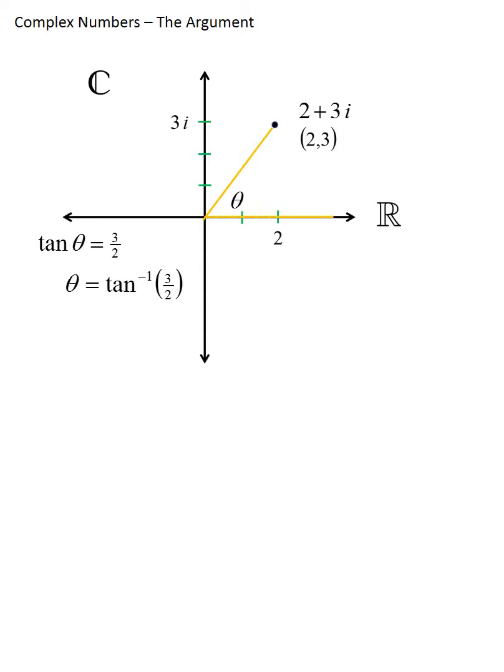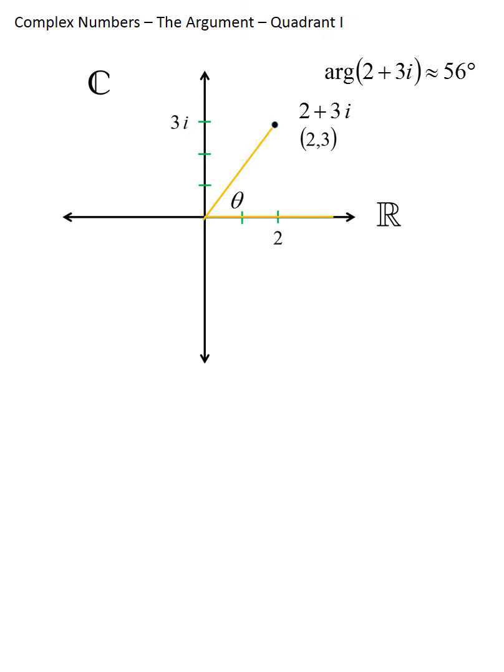To further solve for theta we use the inverse tangent. However, this conversion from tangent to inverse tangent is only 100% reliable when we know theta is an acute angle — between 0 and 90 degrees. Since our complex number is in Quadrant 1, theta is between 0 and 90, so this is completely valid. A calculator approximates theta to about 56 degrees, and we say the argument of 2+3i is about 56 degrees.